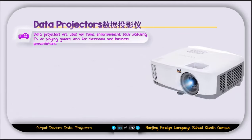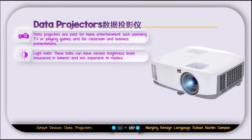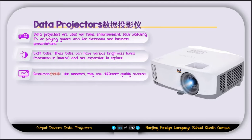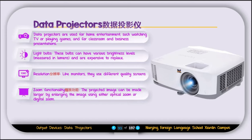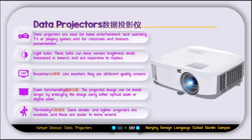The next output device is the data projector. Data projectors are used for home entertainment such as TV or gaming, or for classroom and business presentations. Features include light bulbs with various brightness levels measured in lumens, which are expensive to replace; resolution similar to a monitor; zoom functionality using optical or digital zoom; and portability — smaller, lighter projectors can be taken anywhere in a laptop bag.